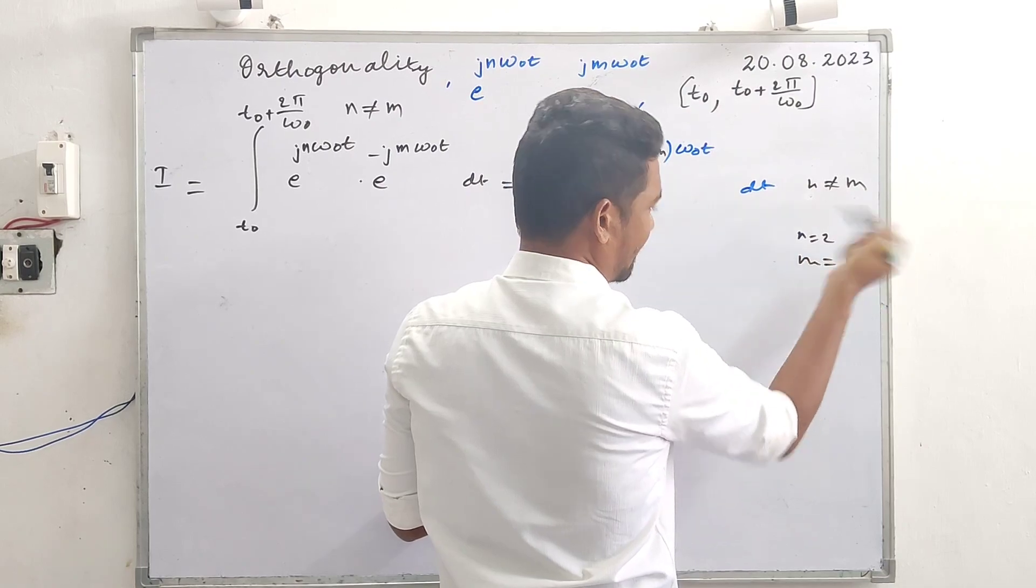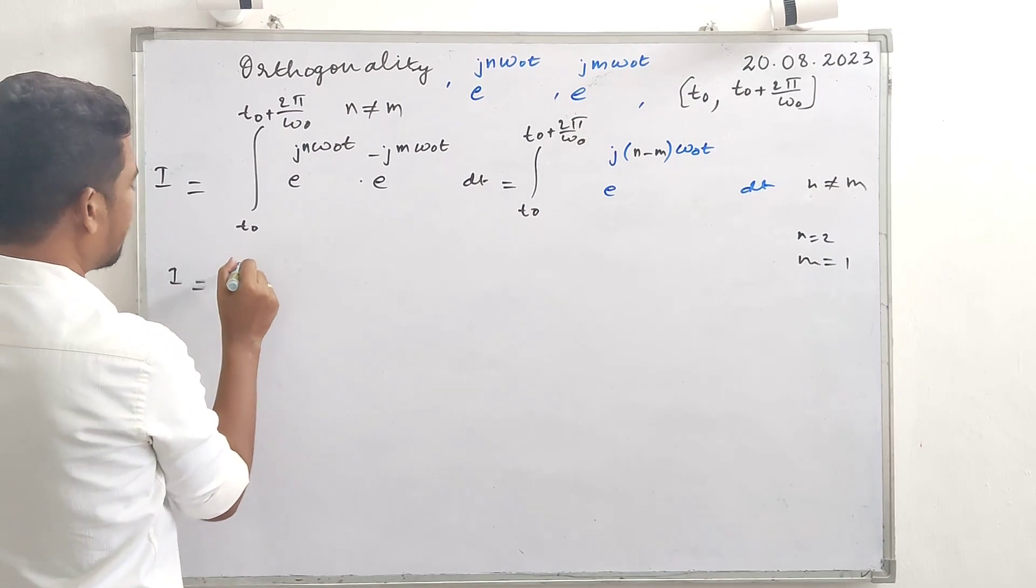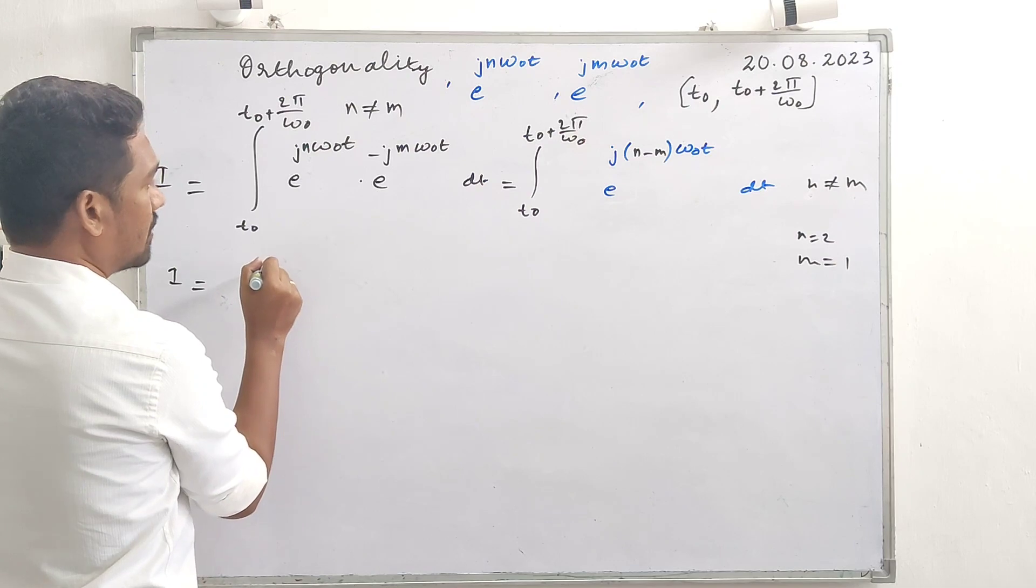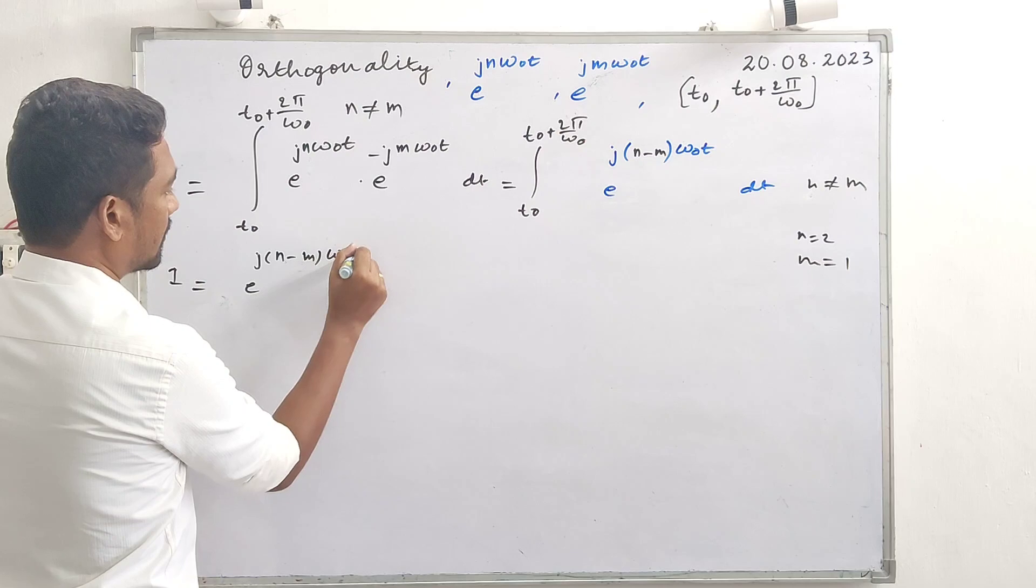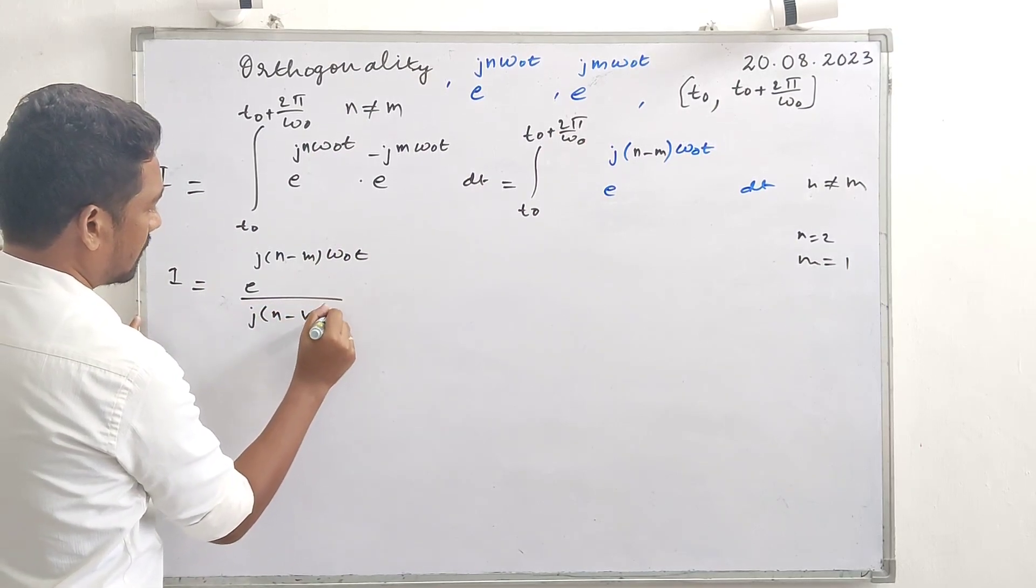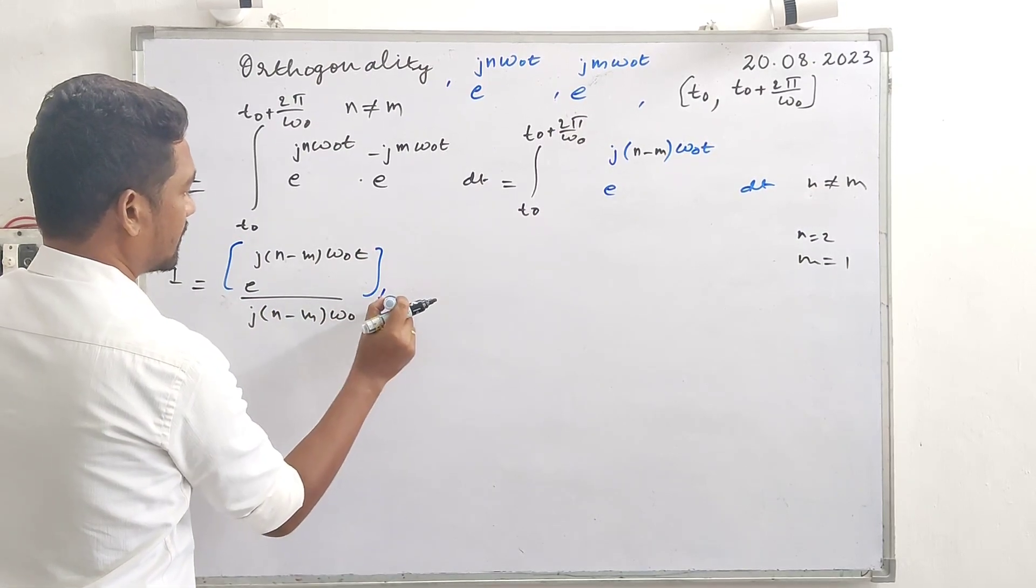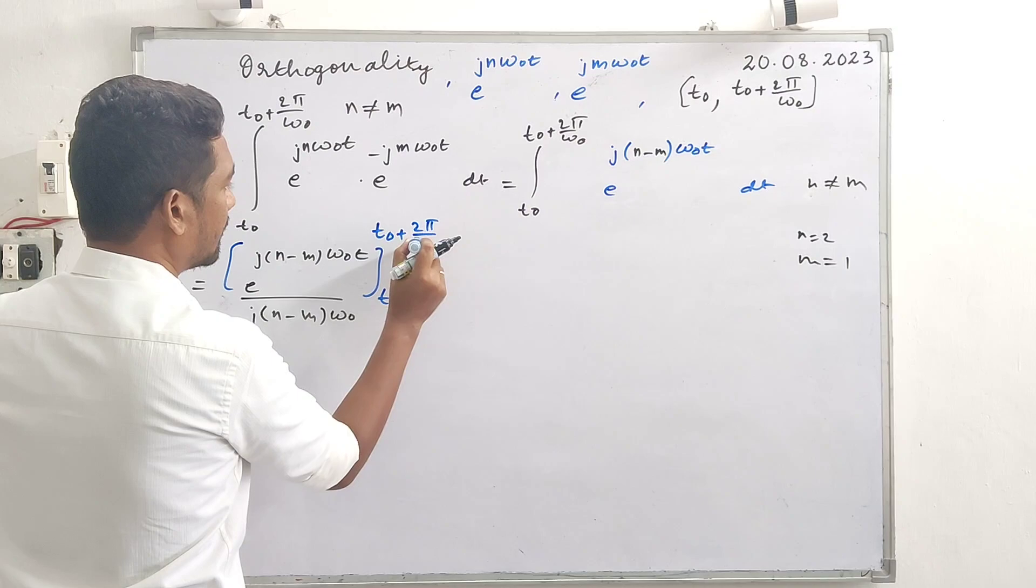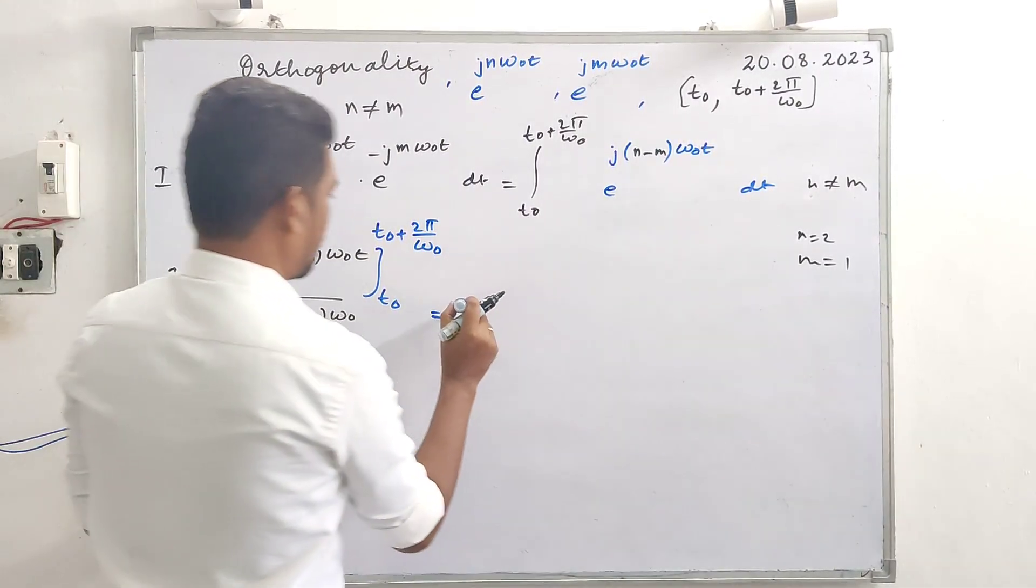Now integrate this. What do we have: e power x dx. So e rise to j n minus m omega naught t by j n minus m omega naught, and the limits are t naught to t naught plus 2 pi by omega naught.